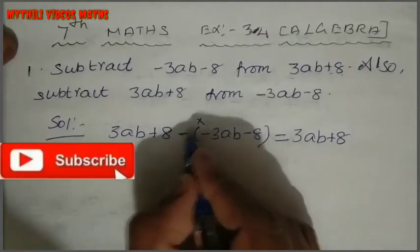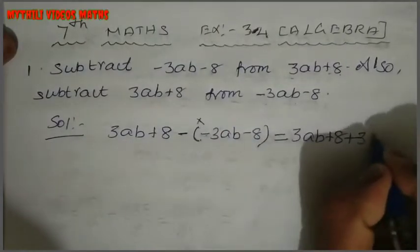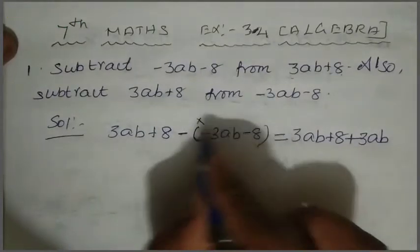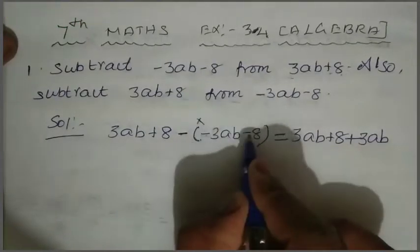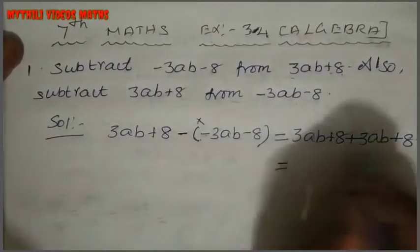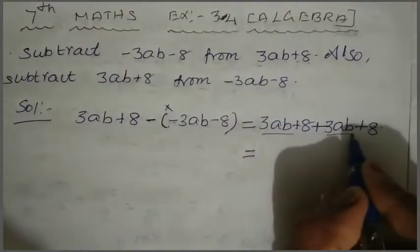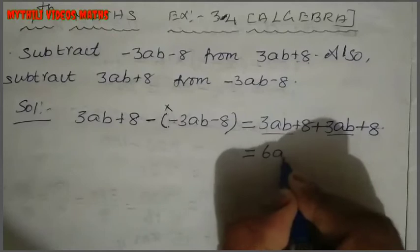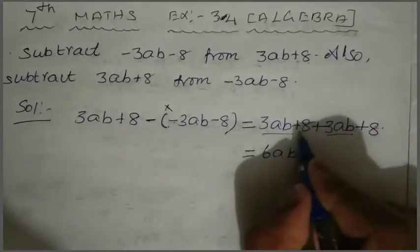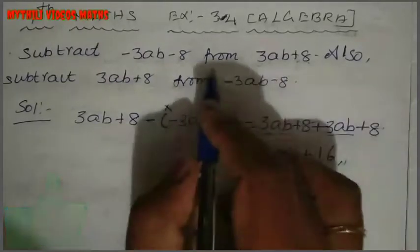Minus into minus is plus, so plus 3AB. Again, minus into minus is plus, so plus 8. Now collect like terms: 3AB and 3AB add to give 6AB. Plus 8 and plus 8 — two constant terms — add to give 16. So the first answer is 6AB plus 16.